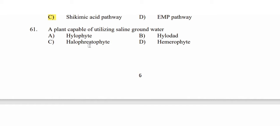Question 61: A plant capable of utilizing saline groundwater. Option A: halophyte. Option B: hyalodad. Option C: halophrytophyte. Option D: hemorophyte. Saline water is available — related to three options here.